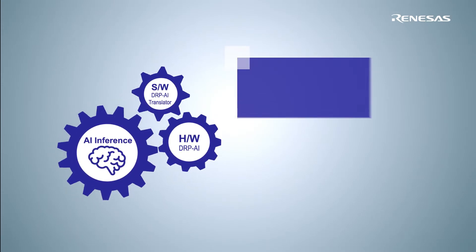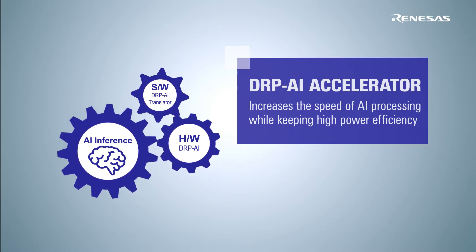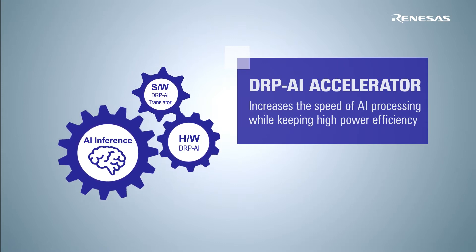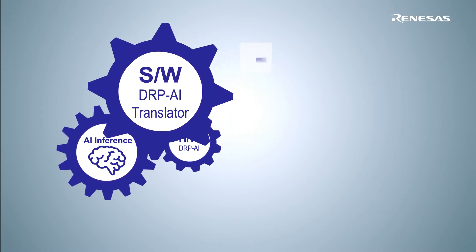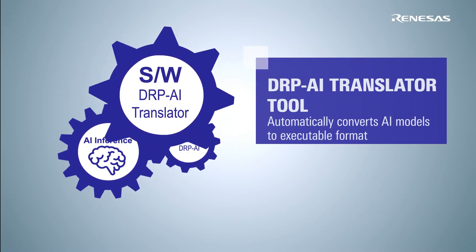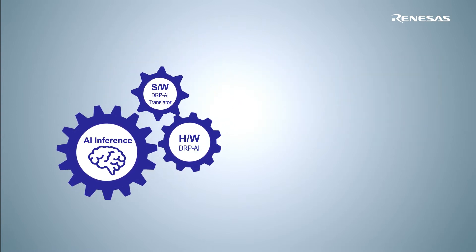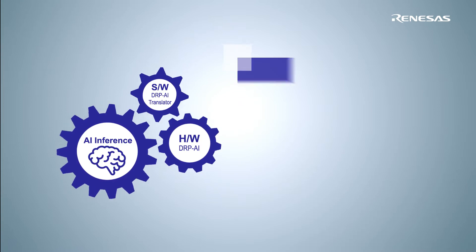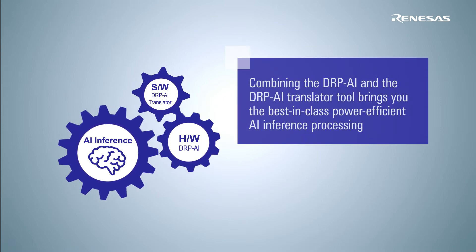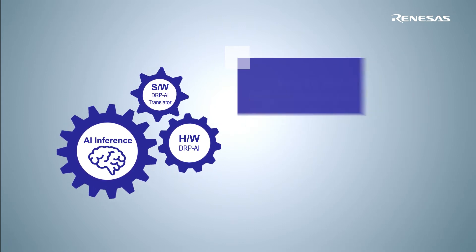Renesas releases its original DRP-AI Accelerator that increases the speed of AI processing while keeping high power efficiency. The complementary DRP-AI translator tool automatically converts AI models to executable format, making it easy to design AI applications. A combination of the DRP-AI and the DRP-AI translator tool brings you the best-in-class power-efficient AI inference processing.